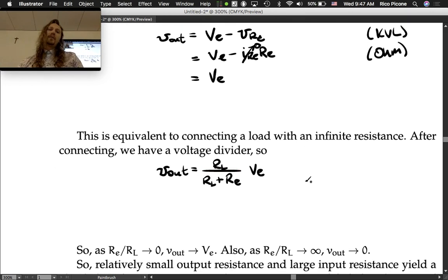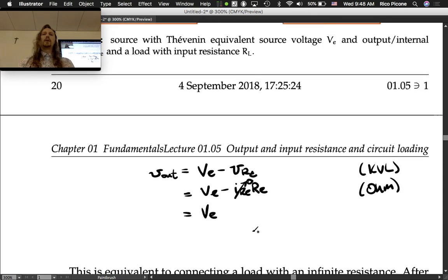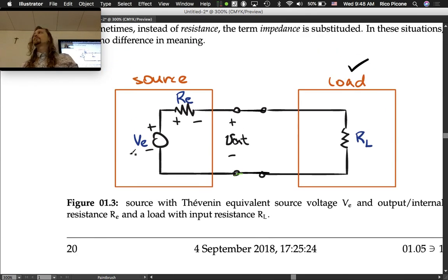I rewrote this in terms of ratios. If you divide the numerator and the denominator by R_L, you get one over one plus R_e divided by R_L times v_e. Let's explore what happens when we change the ratio. As R_e over R_L goes to zero, the output voltage approaches the source voltage, the original source voltage.